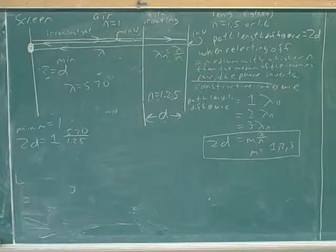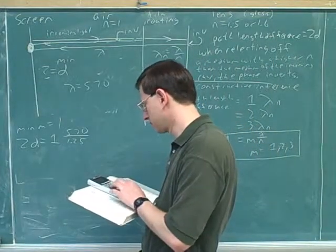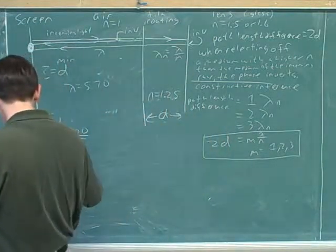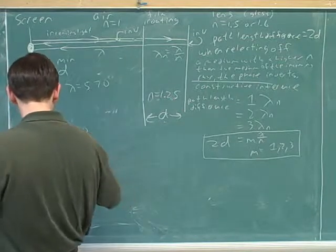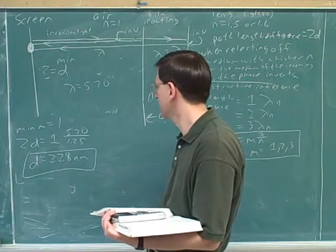I've got a minimum coating of 228 nanometers. A minimum thickness of the coating. OK. I agree with that. 228 nanometers. Good.